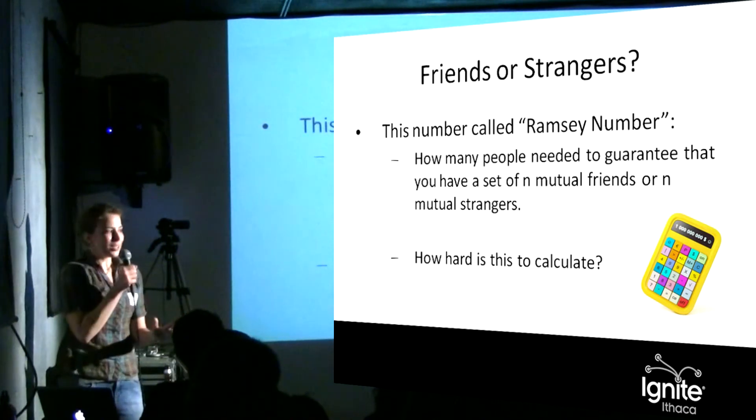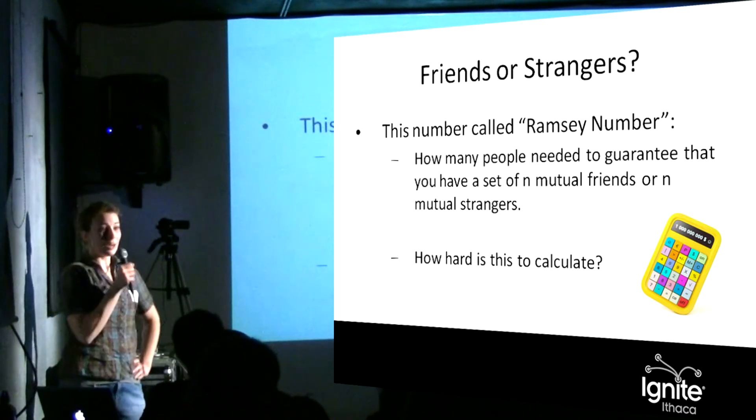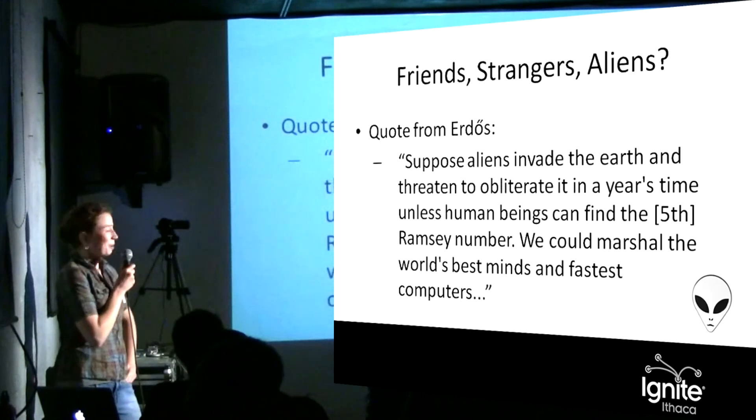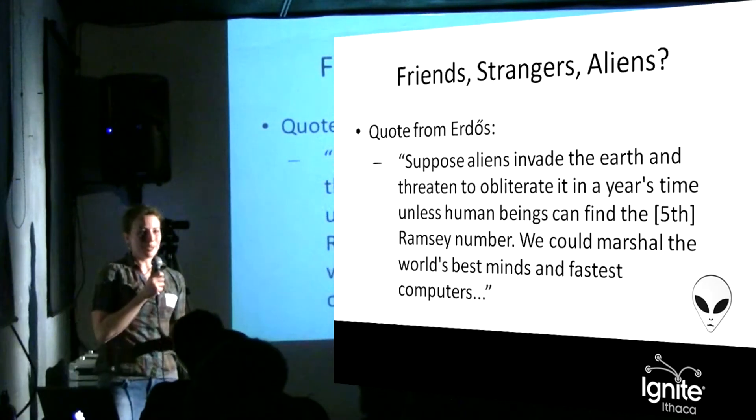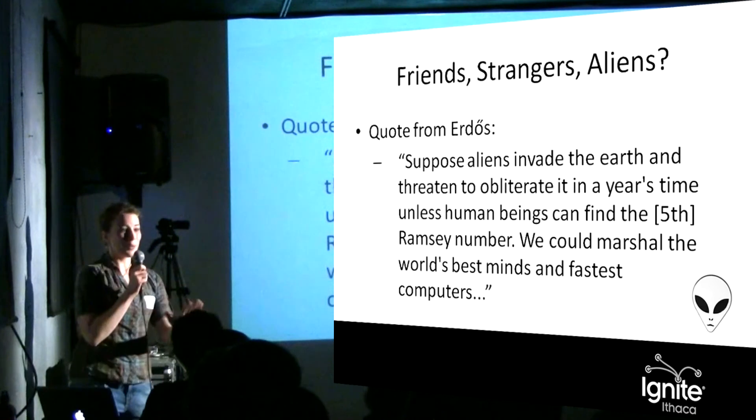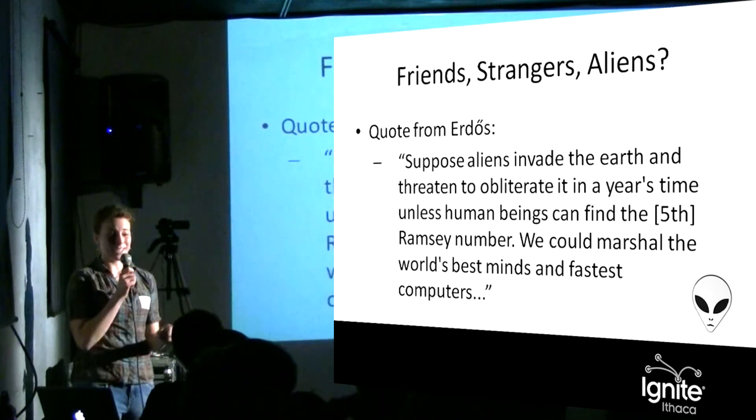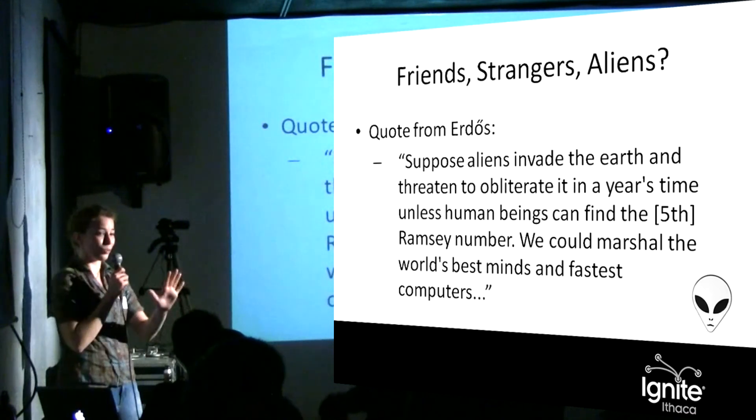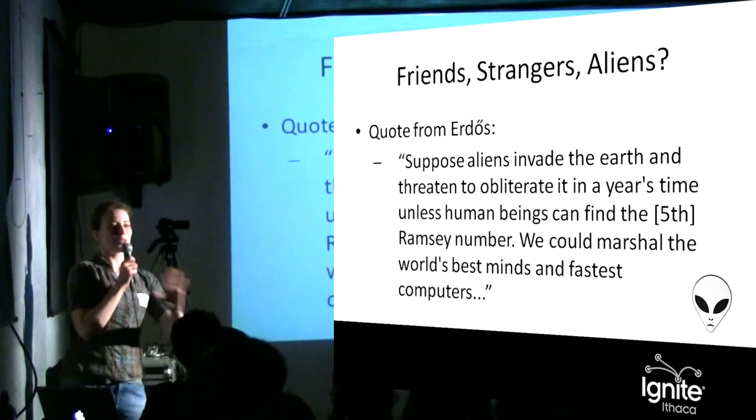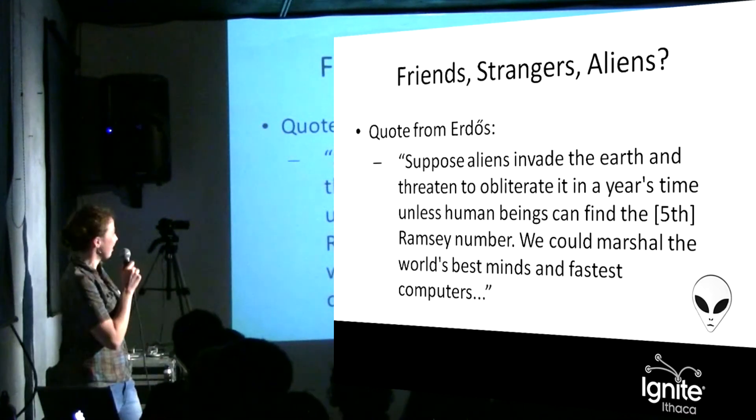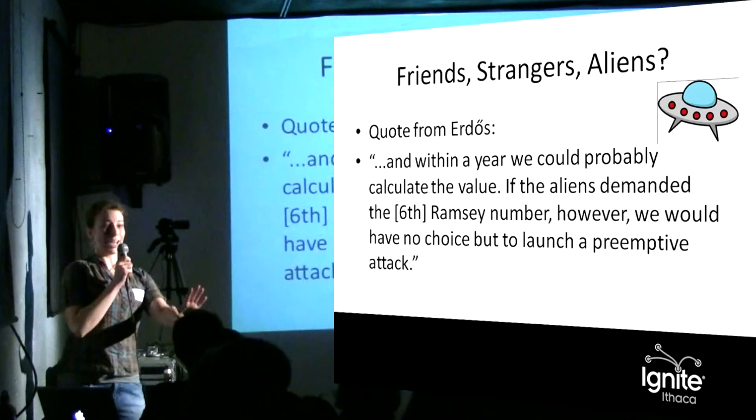It sounds like a really easy thing to state, but a mathematician, Paul Erdős, had a good response to this. Suppose aliens were going to invade Earth, and they told us they would destroy everyone on Earth in a year if we couldn't compute the fifth Ramsey number. So that's how many people it takes to have five mutual friends or five mutual strangers. We could marshal the world's best minds and fastest computers, and within a year we could probably get it.